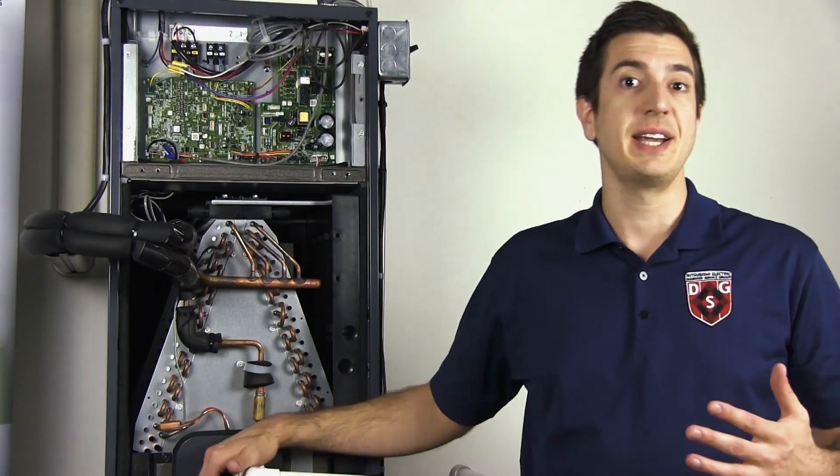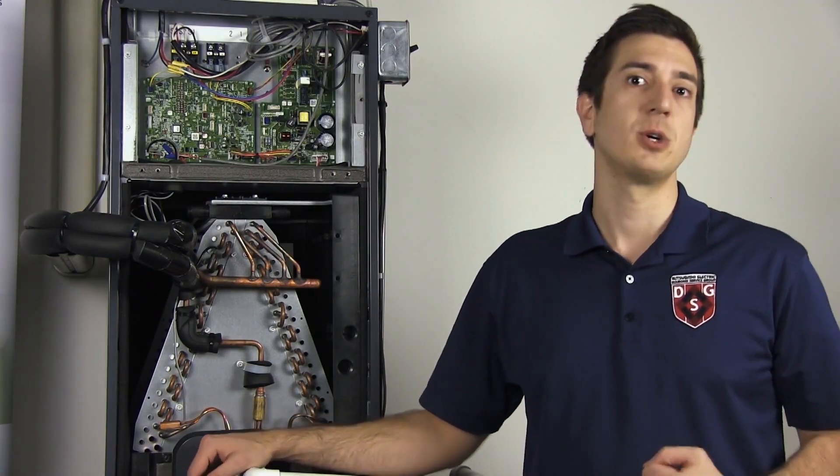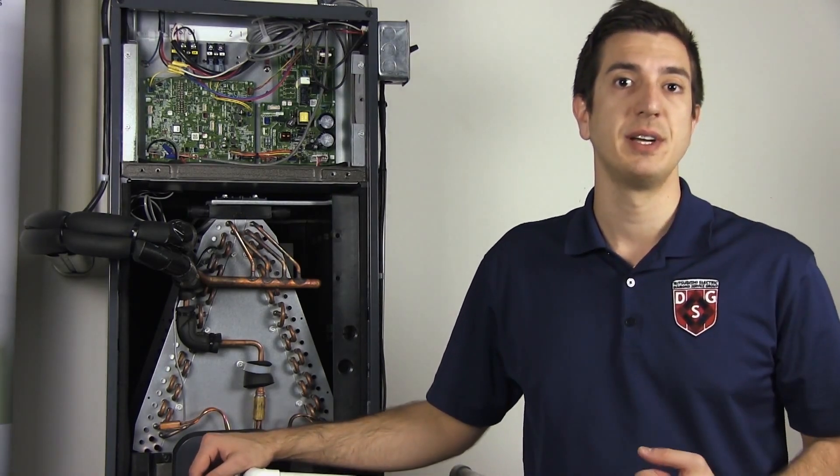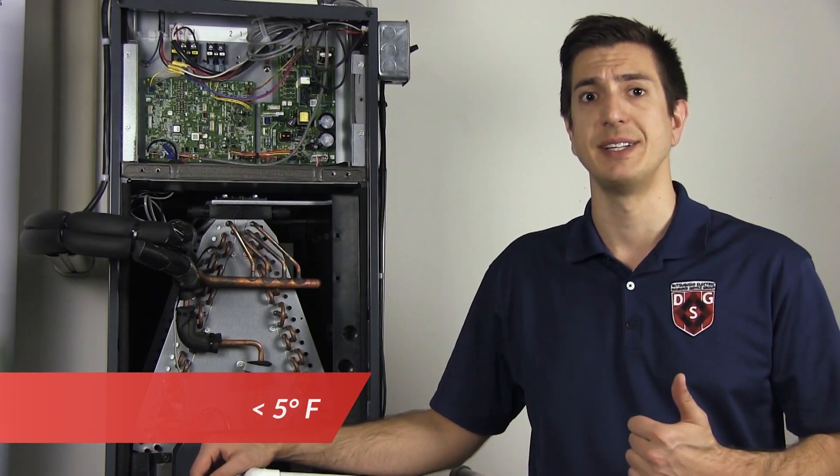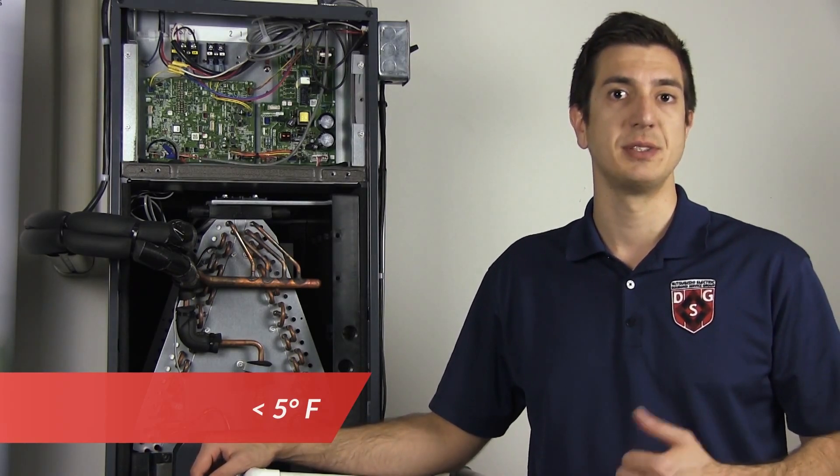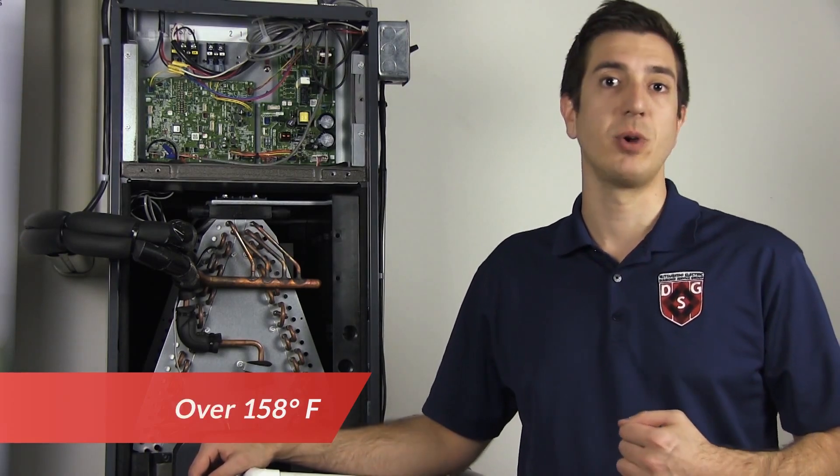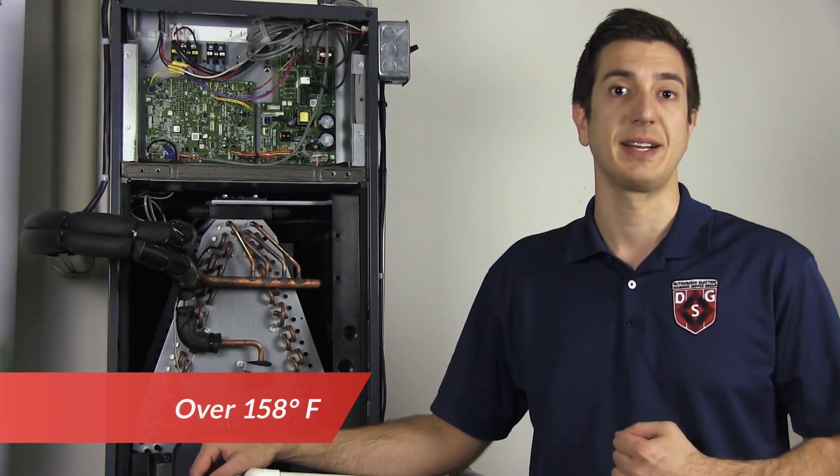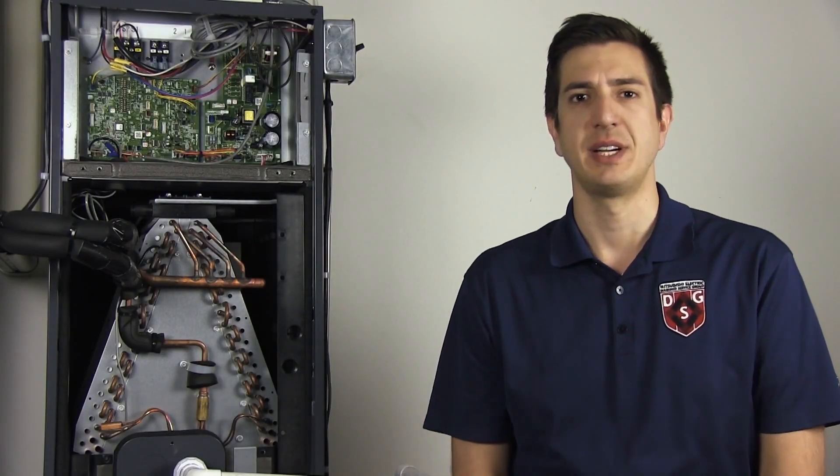So the P6 error means our evaporator coil is either freezing or it's overheating, depending upon which mode we're running it in. In the cooling mode, if our evaporator coil senses less than 5 degrees Fahrenheit during the compressor operation, it'll shut itself down. In the heating mode, if the coil is over 158 degrees Fahrenheit, it'll do the same exact thing.